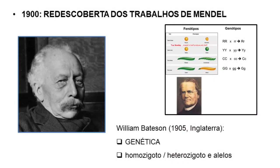Três botânicos europeus realizaram experimentos independentemente que deram resultados compatíveis com os princípios descritos por Mendel, e aí eles encontraram e citaram o artigo dele. Mas o verdadeiro responsável por disseminar o nome de Mendel como pai da genética, por traduzir para o inglês o trabalho de Mendel e por escrever livros a respeito, foi outro grande personagem da genética que inclusive criou o termo 'genética': o inglês William Bateson. A genética então nasce com um olhar matemático sobre os resultados de cruzamentos entre variedades distintas de plantas — as chamadas proporções mendelianas. Mas a base física, química e biológica para esses resultados probabilísticos era ainda um grande mistério.